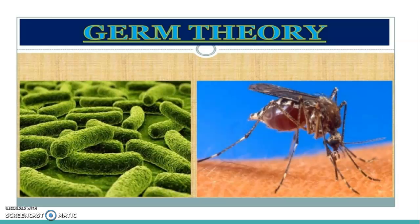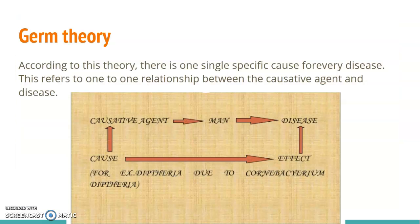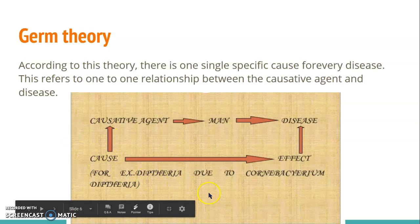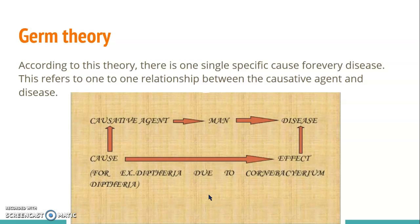We all know what germ theory is. If a disease is caused by a germ, it says all diseases are caused by germs. This is the first concept describing how disease is formed. According to this theory, there is one single specific cause for every disease — a one-to-one relationship between the causative agent and the disease. For example, diphtheria is caused by Corynebacterium diphtheriae. So this theory says one disease is caused by one germ.